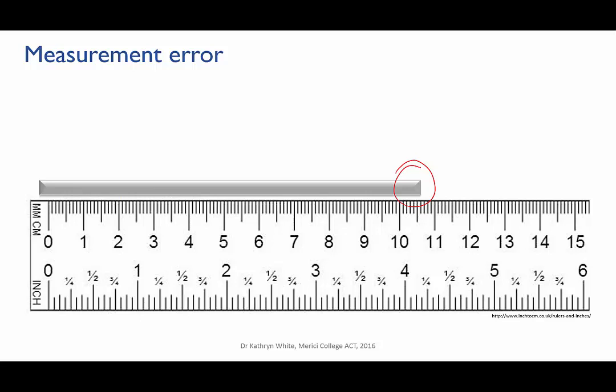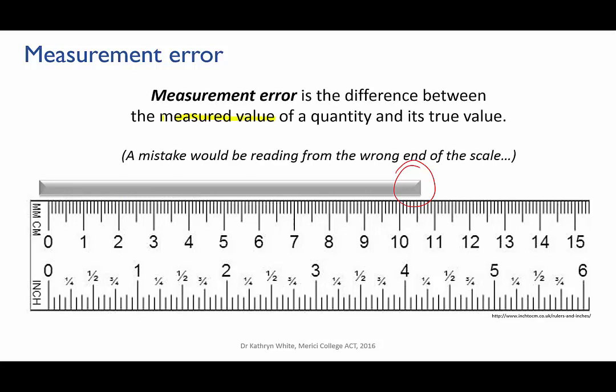By error, I don't mean a mistake like that you had the ruler back to front and read from the wrong end, although that mistake would certainly lead to a large error in your measurement. The proper definition of measurement error is the difference between the measured value of a quantity and its true or standard value.